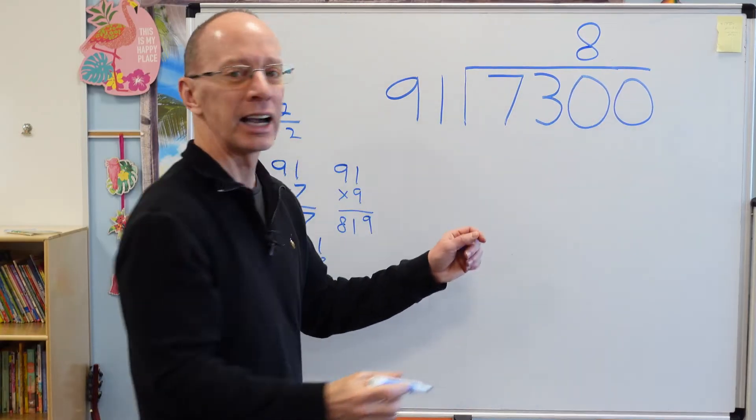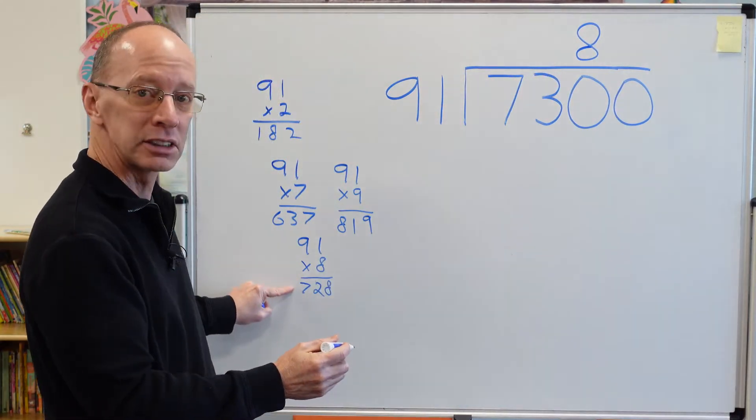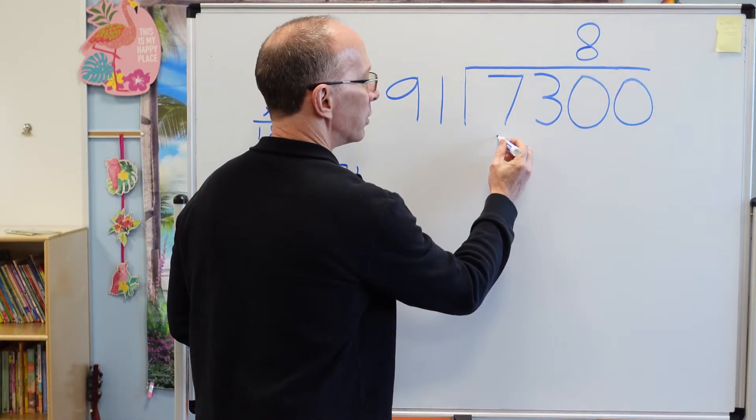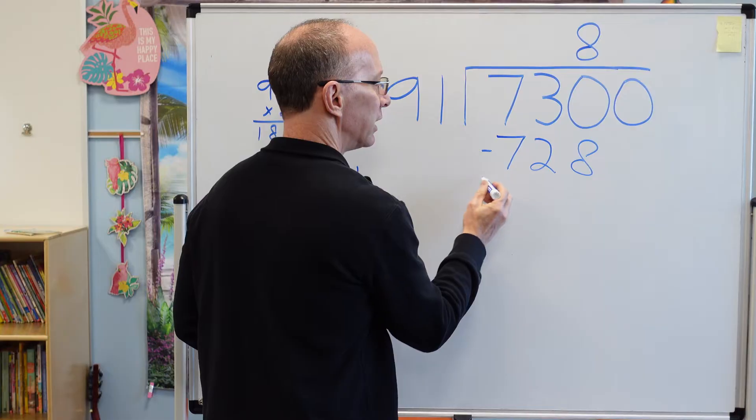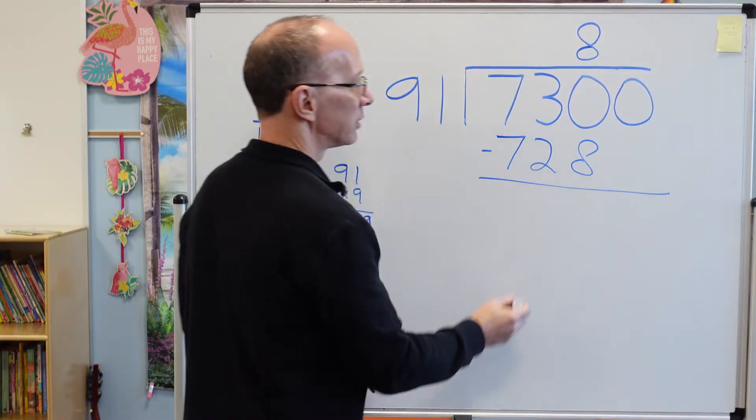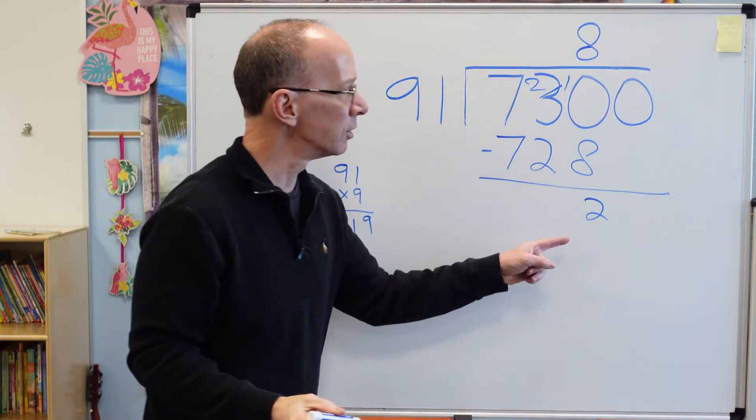Alright, so then I do multiplication. 8 times 91, 728. So I put 728. And then I subtract. That would leave me 2. I had to borrow here. So that's 2.